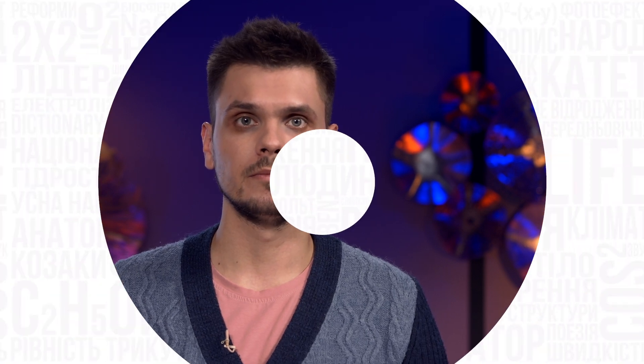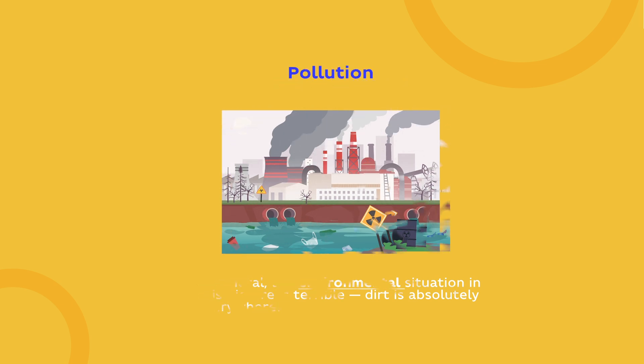To describe this picture you can use the following words. Environmental — in general, the environmental situation in this picture is terrible. Dirt is absolutely everywhere. Pollution — a big amount of dirt, either in the air, water or on the ground is called pollution.